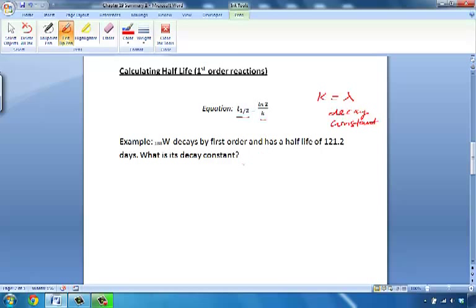Sometimes you'll see this equation as t½ equals 0.693 over k. And that is just ln of 2. If you plug that into the calculator, you get 0.693. So sometimes the equation is already simplified into this form, but they are the same equation. One is just simplified.